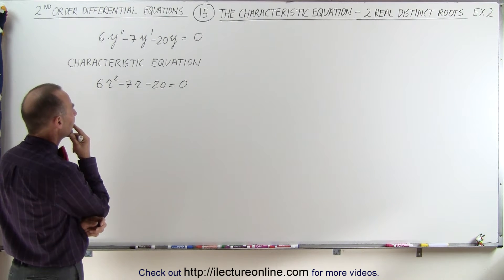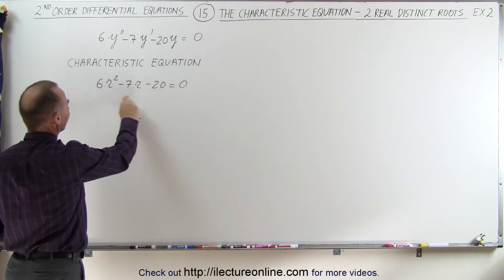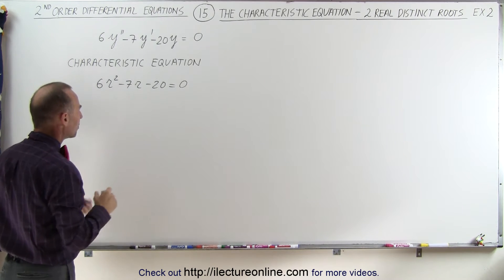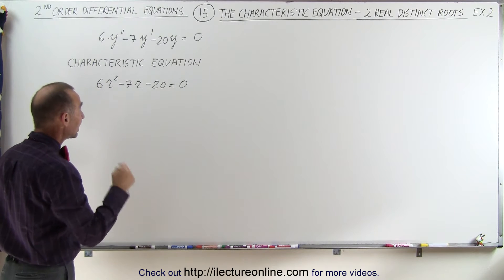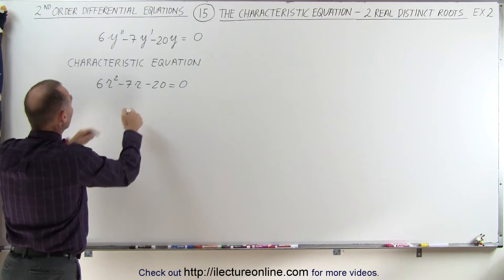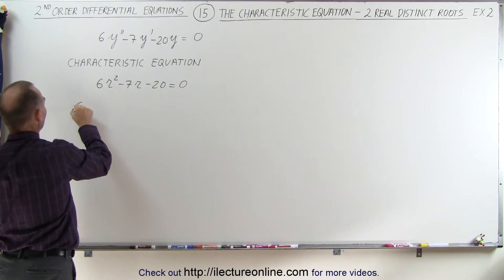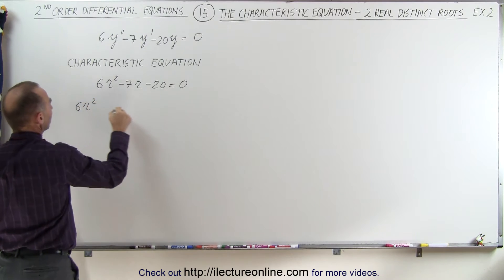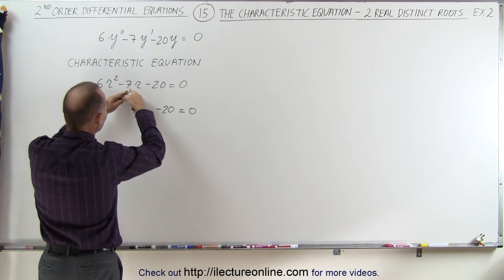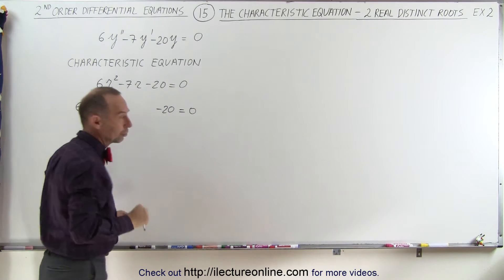When we have a coefficient in front of the r² term, it becomes a little more difficult. But we can use a technique where we divide this into two middle terms. I'm going to spread this out: 6r² and -20 = 0, and rewrite the middle term as the sum of two middle terms.